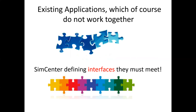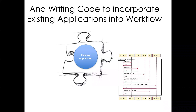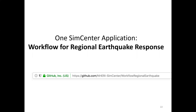The SimCenter defines nice interfaces that each application must meet so it fits into the framework. Since everybody wants to use existing applications, we provide wrappers around them — code that takes the input the framework expects and turns it into what the program needs, then takes the program's output and puts it into the format the SimCenter framework requires, along with any additional application-specific inputs and outputs.